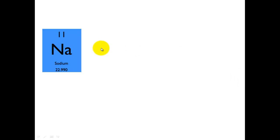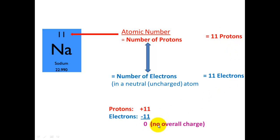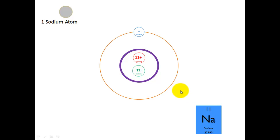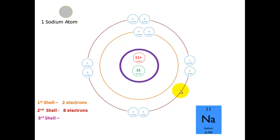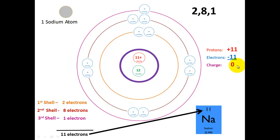The third example is sodium, with an atomic number of 11. So we've got 11 protons and 11 electrons, giving an overall net charge of 0. We've got 11 protons and 12 neutrons — 22.9 minus 11 is pretty much 23, so we say 12 neutrons. We have 2 in the first shell, 8 in the next shell, and 1 in the outside shell, giving a total of 11 electrons. We've got a configuration of 2, 8, 1 — 11 protons, 11 electrons, and an overall charge of 0.